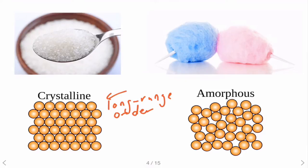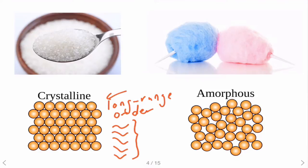What does it mean by long range order? If you look at the structure, the molecular arrangement in the crystalline state has molecules arranged in a specific pattern on the crystalline lattice, which occupy the space as we can see here. This is what we refer to as the long range order.